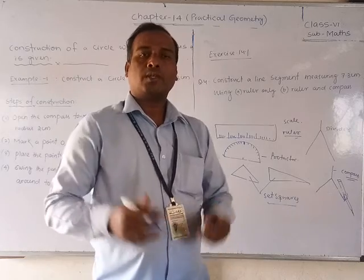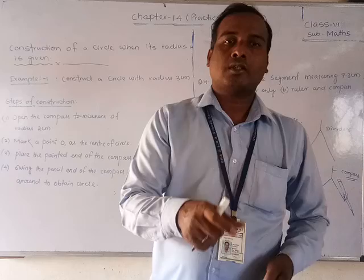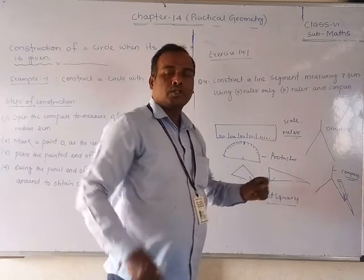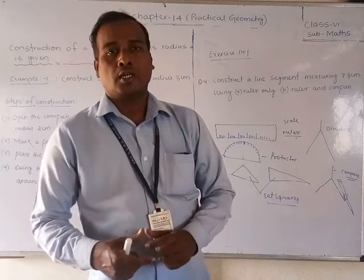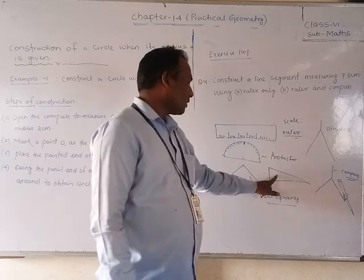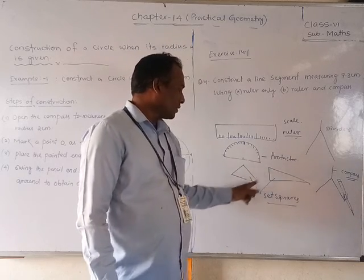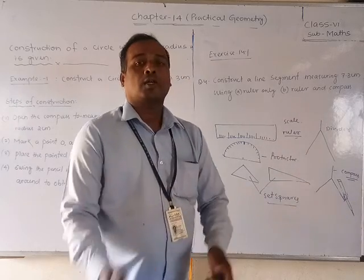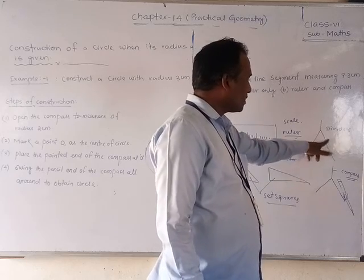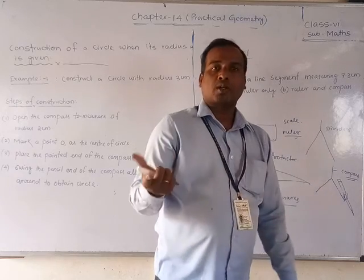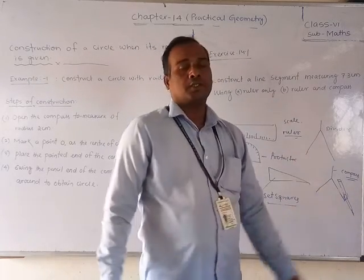So friends, remember: whenever a question says 'using protractor' you must use the protractor; 'using ruler' means you use the scale; 'using set square' means you use the 60-degree or 90-degree set square. These are called set squares. This is called a divider and this is called a compass. A rubber (eraser) you may also use, but it is not a geometrical instrument.